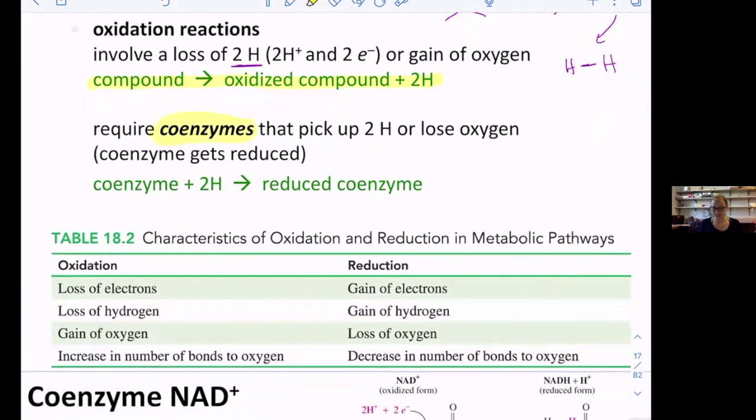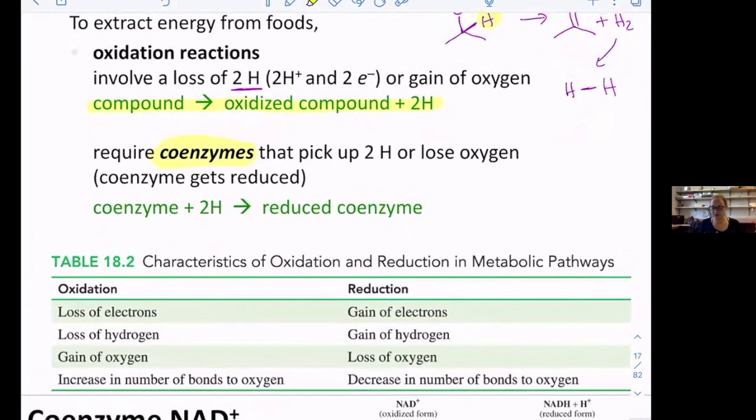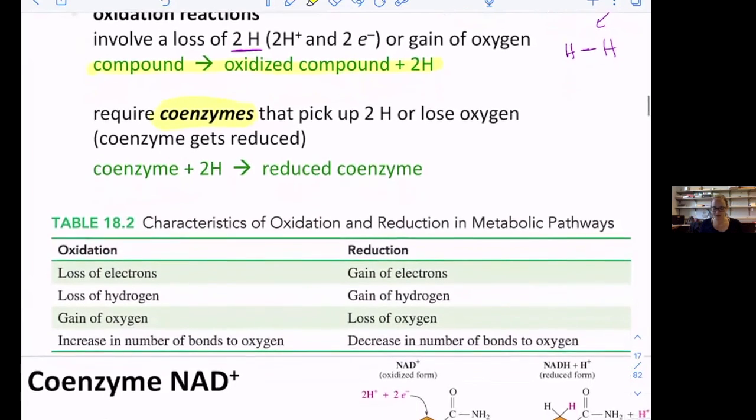So oxidation and reduction metabolic pathways - overall, remember that oxidation, you lose electrons, you lose hydrogen, but you gain oxygen bonds, gain bonds to oxygen and increase the number of bonds to oxygen. And then it'll be opposite for reduction. So when you reduce something, you gain electrons, you gain hydrogen, you lose oxygen, or you lose a number of bonds to oxygen.